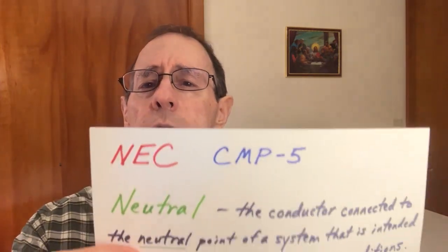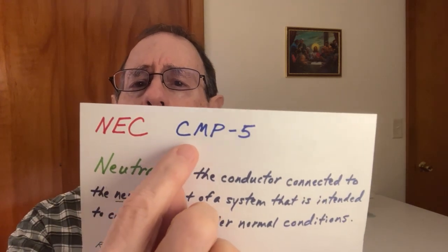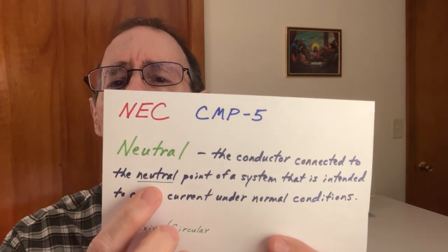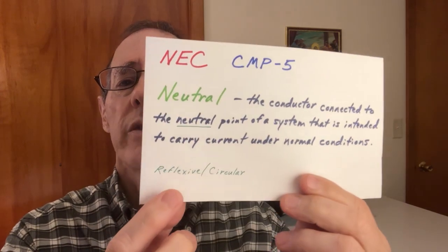The National Electrical Code people have code making panels, and panel number five came up with a definition. I will read it to you: 'Neutral — the conductor connected to the neutral point of a system that is intended to carry current under normal conditions.' They use the word neutral in the definition to define neutral. That's what we call reflexive or circular — it doesn't give you an absolutely clear or concise definition.